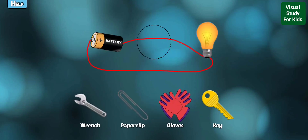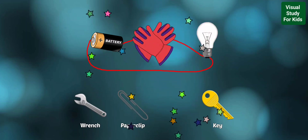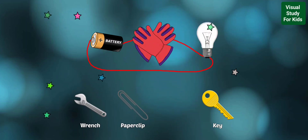Drag the object that is an insulator so the light bulb stays off. Right! That object is an insulator because it will impede the flow of electricity, which turns off the light.